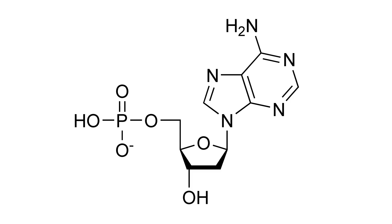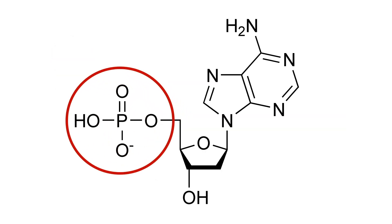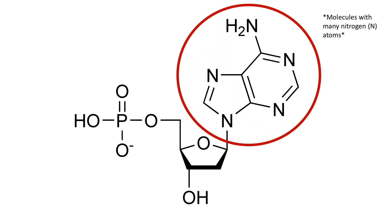This is what a nucleotide looks like. Each nucleotide has three components: a pentose sugar, a phosphate group, and a nitrogenous base. A pentose sugar is a monosaccharide — a single sugar molecule — with five carbon atoms. The phosphate group is a molecule that contains one phosphorus atom linked through bonds to four oxygen residues. A nitrogenous base is a molecule with a nitrogen atom that has the chemical properties of a base. These nitrogenous bases play a big role in the structure and function of DNA and RNA — for instance, they create the genetic code.